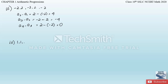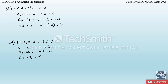For the fourth question, the list is 1, 1, 1, 2, 2, 2, 3, 3, 3. Checking: a2 minus a1 = 1 minus 1 = 0; a3 minus a2 = 1 minus 1 = 0; a4 minus a3 = 2 minus 1 = 1; a5 minus a4 = 2 minus 2 = 0. The common difference is not equal, so this sequence is not an AP and we cannot determine the next two terms.